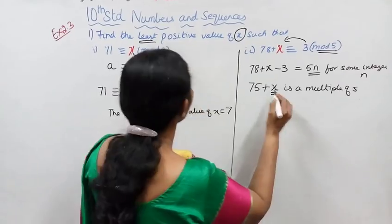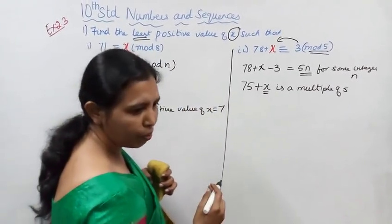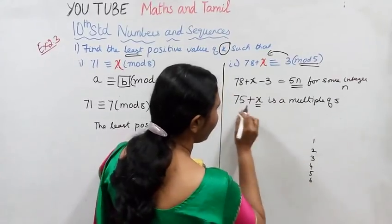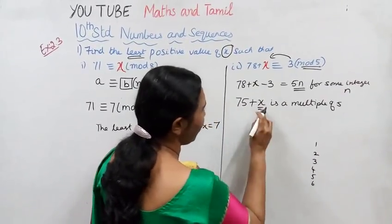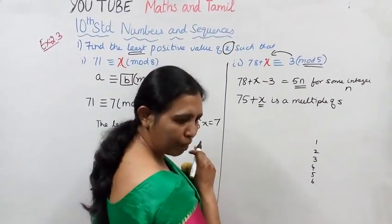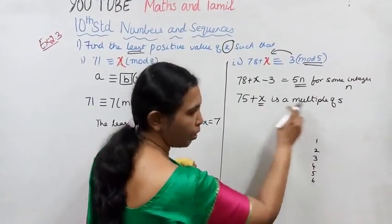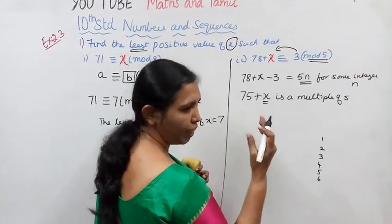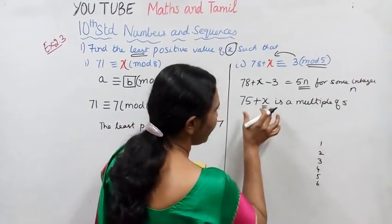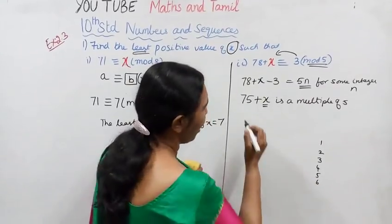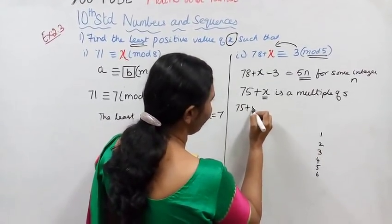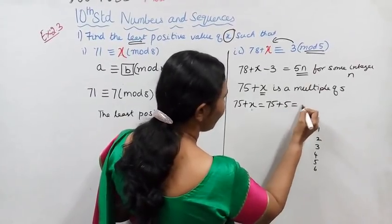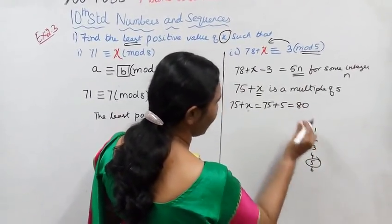Least positive value: 1, 2, 3, 4, 5, 6. Some multiple of 5, 75 plus 1, 76 is a multiple of 5. 75 plus 2 is a multiple of 5, 77. 77 is a multiple of 5. The answer is the remainder zero. 75 plus 5, 75 plus 5 equal to 80, 80 is a multiple of 5.